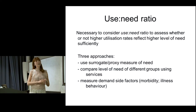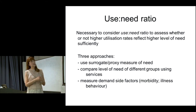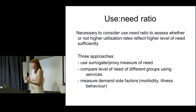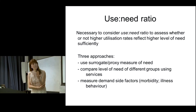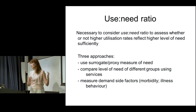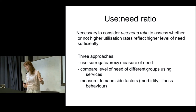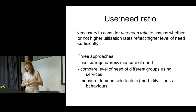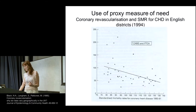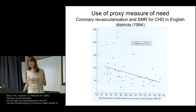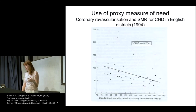To do that, we have to consider one more thing: the use-need ratio. It's necessary to consider use and need together, to think about whether or not a higher utilization rate reflects a higher level of need sufficiently. It's difficult to know true need, so we use a surrogate or proxy measure of need, compare that across different groups using the same surrogates, and also measure demand-side factors like morbidity and illness behavior.